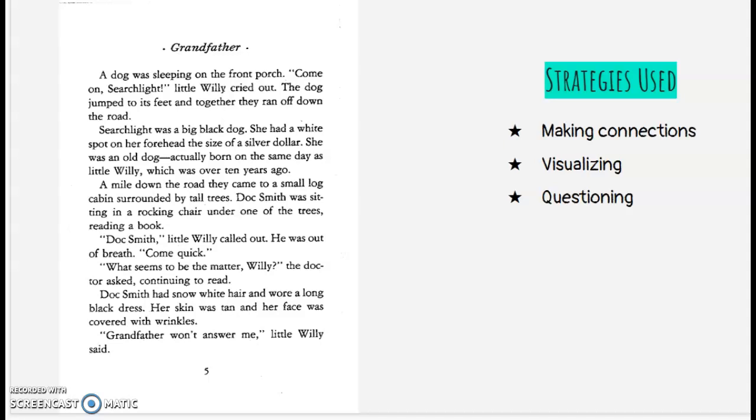Along page five, I was making connections just with the dog sleeping on the front porch. It made me think of my dog sleeping on his bed or on the couch. And when Willie cried out to him, come on Searchlight, it made me think of when I call out to my dog, come on Wallace, and he jumps to his feet and then he runs wherever I'm at. And then I also had just this visualization of the dog and what she looked like. And in my head, I kind of pictured my parents' dog. He was a black lab and he had a white spot on his chest. So it made me visualize the same kind of thing.